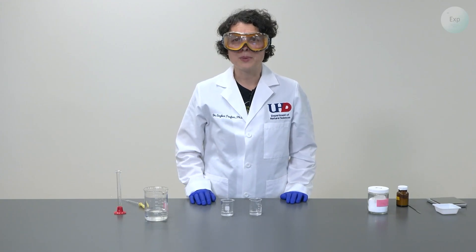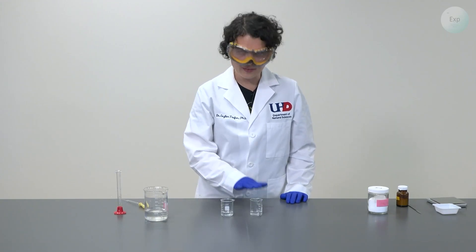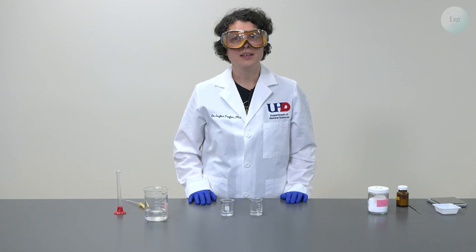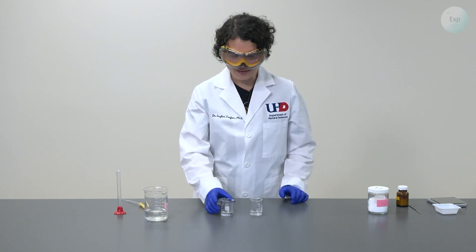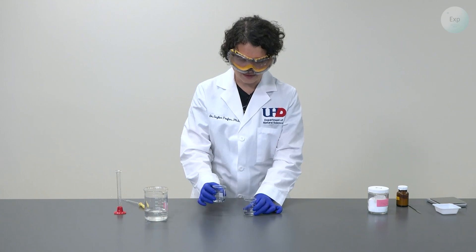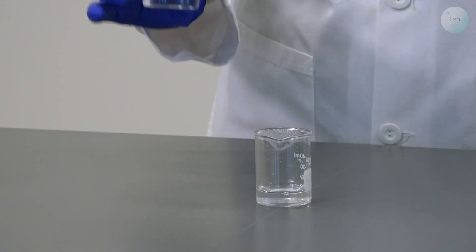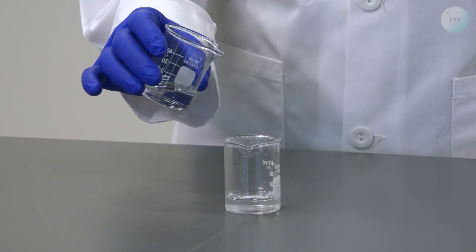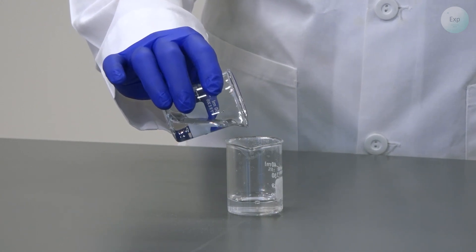It has been approximately 5 minutes and both the calcium chloride and the sodium carbonate fully dissolved in the 10 milliliter deionized water. Now, it comes to the precipitation reaction. I will take my calcium chloride solution and pour it into the beaker that contains the sodium carbonate solution.